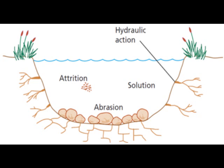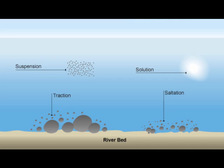Transportation: rivers pick up and carry material as they flow downstream. There are four different river transport processes. Solution: minerals are dissolved in the water and carried along in solution. Suspension: small particles are suspended in the water. Saltation: small pebbles and stones are bounced along the riverbed. Traction: when boulders are rolled across the riverbed.